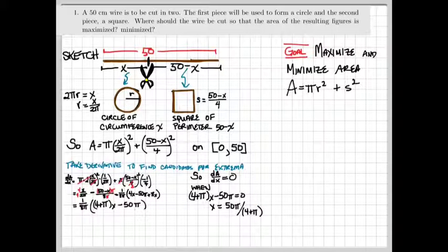So to look for our max and min area, we want to test the critical point we found here and the two end points, 0 and 50.